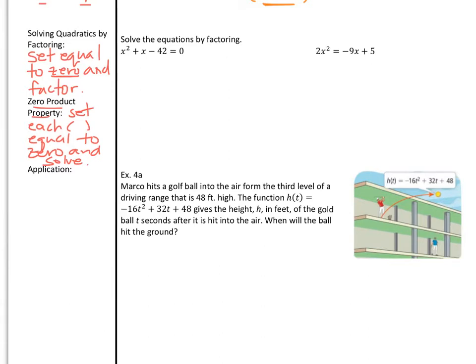In the first example, solve the equation by factoring: x squared plus 1x minus 42 equals 0. It's already set equal to 0, so now we need to factor. The a value is 1, so we just have to split the c value, 42. We want negative 42 when we multiply and positive 1 for x in the middle when we add. There are a lot of factors of 42: 1 and 42, 2 and 21, 3 and 14, and 6 times 7. The only pair that could give us 1 in the middle would be that last set, 6 and 7.